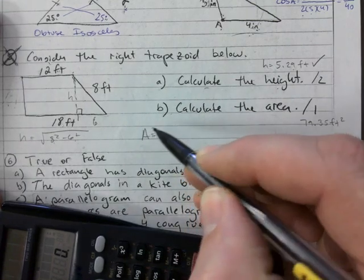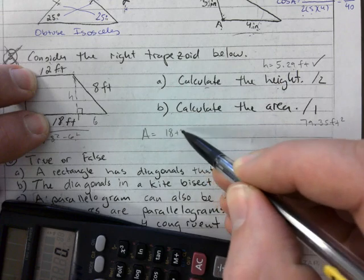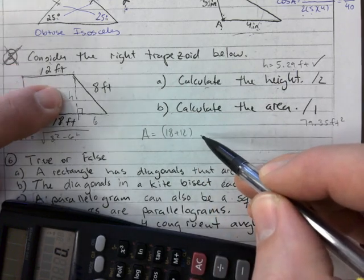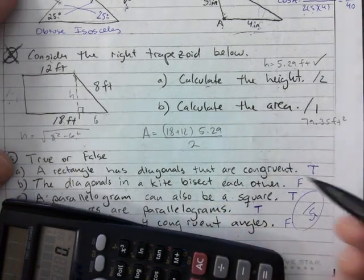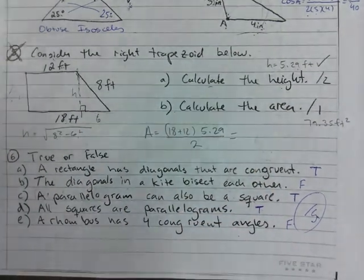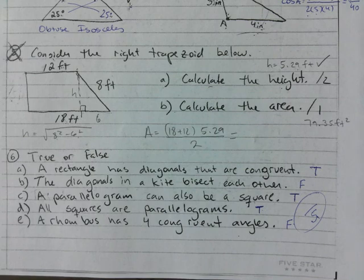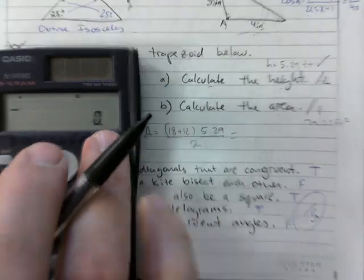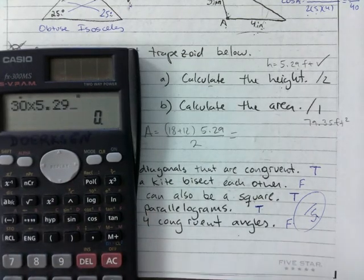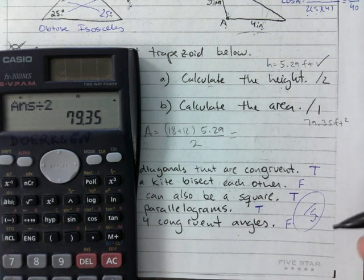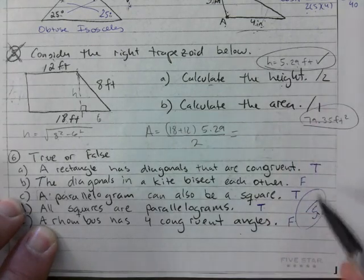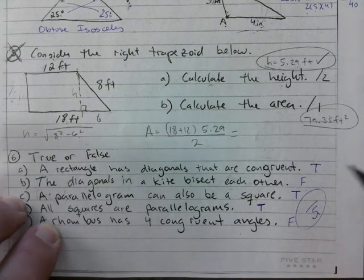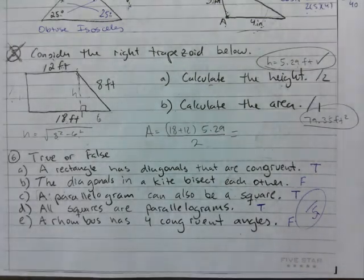One mark for height and one mark for area. To get the area of a trapezoid: add the two parallel sides, make sure you do that in brackets, multiply by the height, then divide the whole thing in half. That works out to 79.35. One bonus mark for the height and one bonus mark for the area, but you have to show your work — you can't just copy it down.